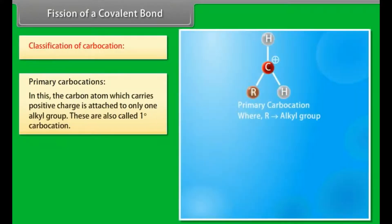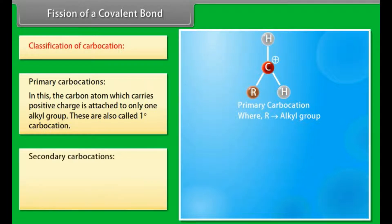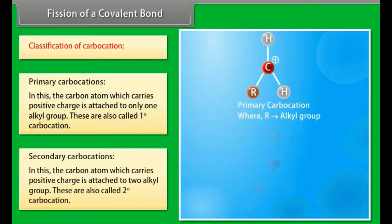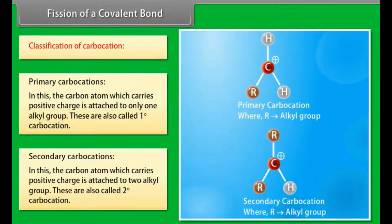Classification of carbocations. Primary carbocations: the carbon atom which carries positive charge is attached to only one alkyl group; also called one degree carbocation. Secondary carbocations: the carbon atom which carries positive charge is attached to two alkyl groups; also called two degree carbocation.